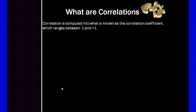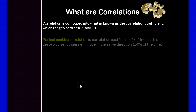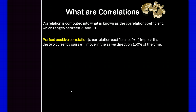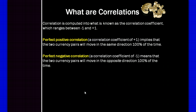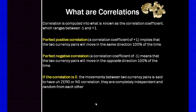Correlation is computed into what is known as the correlation coefficient, which ranges between plus 1 and minus 1. A perfect positive correlation has a coefficient of plus 1, meaning two currency pairs move in the same direction 100% of the time. A perfect negative correlation has a coefficient of minus 1, moving in the opposite direction 100% of the time. A coefficient of 0 means the movements are completely independent and random from each other.